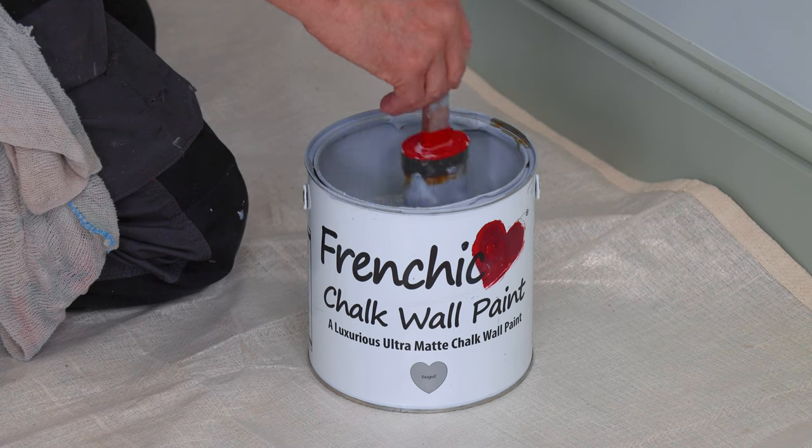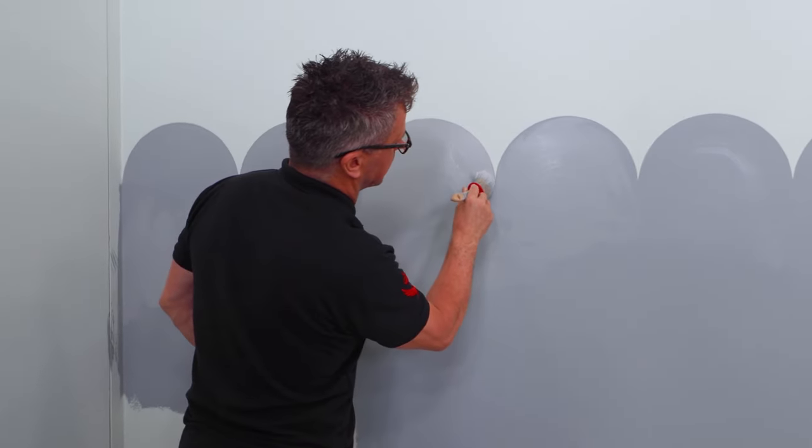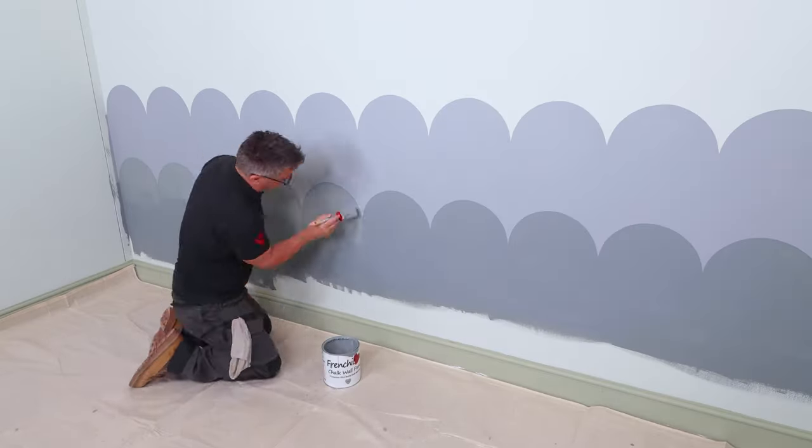Then take your paintbrush and carefully start to cut in around your pencil scallop shapes. Once you've done one, you can let it dry, apply a second coat, and then even use a darker colour and create an ombre effect. You can do as many scallop lines as you wish.